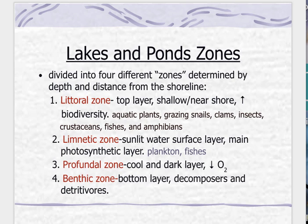Then you go out further into the limnetic zone. This is very sunlit — this is where you have the euphotic zone. It's the water surface layer and the main photosynthetic layer. You have good amounts of dissolved oxygen as well as photosynthesis rates occurring here. So you have a lot of plankton and fish.